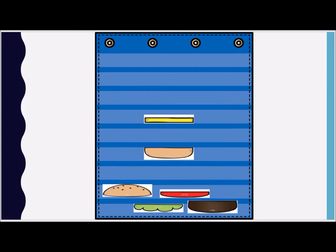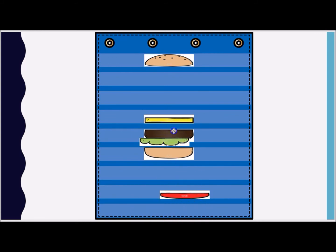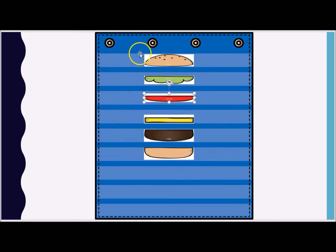The final lesson on top, middle, and bottom is building a burger. You start with the hamburger bun at the bottom, then ask children to place the meat, cheese, tomato, and lettuce — using vocabulary like 'put the tomato under the lettuce.' The bottom bun is the bottom, all the fillings are in the middle, and the top bun is the top. It gives them another opportunity to practice those positional skills.